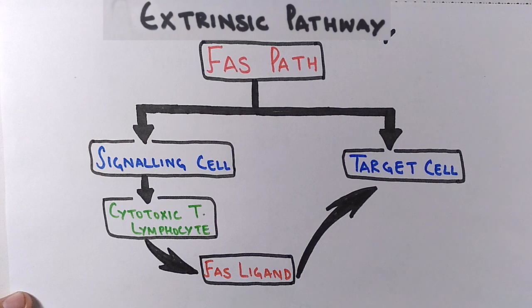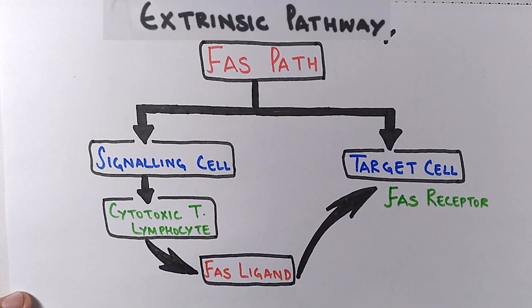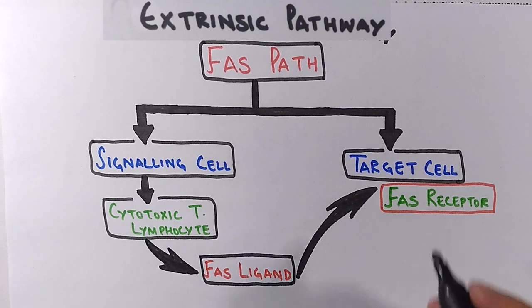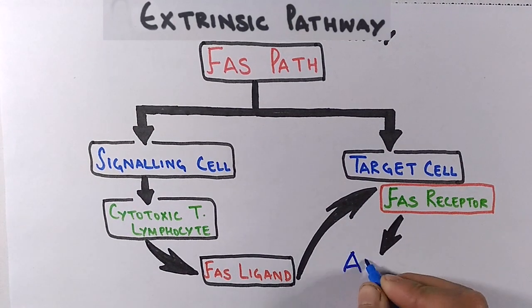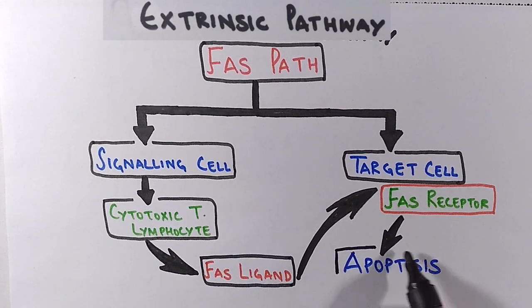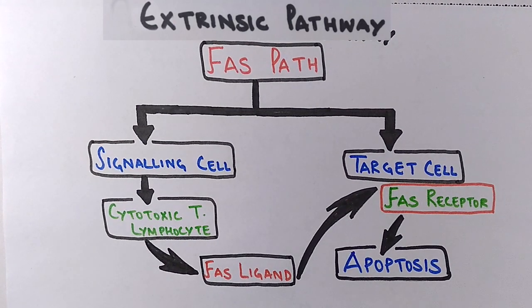The FAS ligand will go and bind to the target cell through a FAS receptor present on target cell, and this binding drives off the further reactions to kill the cell through a process called apoptosis. Now let's see in detail how the cytotoxic T cell initiates the process of apoptosis on target cells.